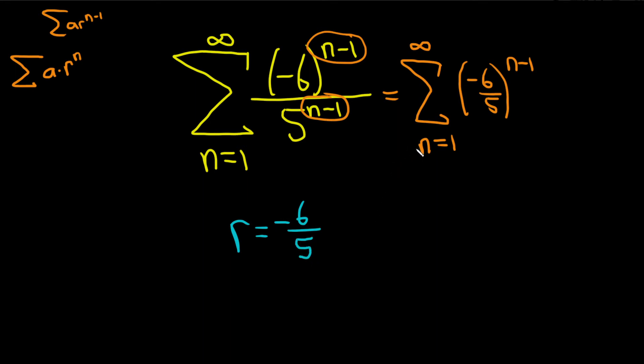So there's something called the geometric series test, GST. The geometric series test says if r, which is called the common ratio by the way, if r is less than 1 then your geometric series will converge. And if the absolute value of r is greater than or equal to 1 then your geometric series diverges.